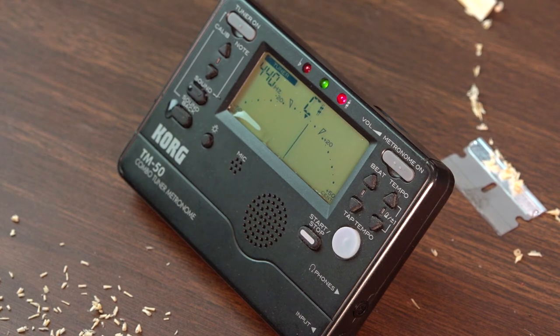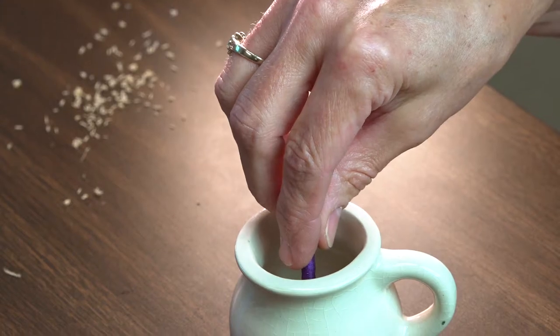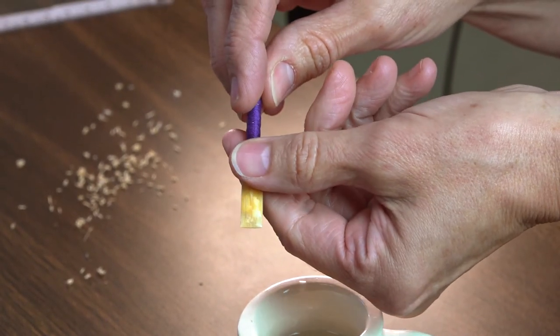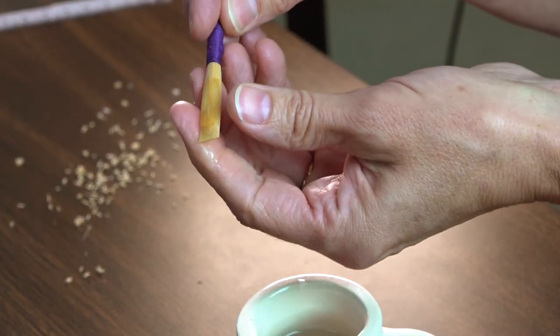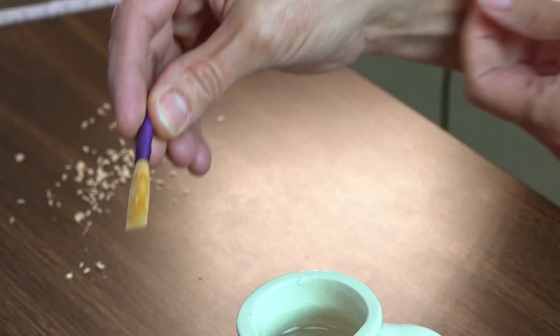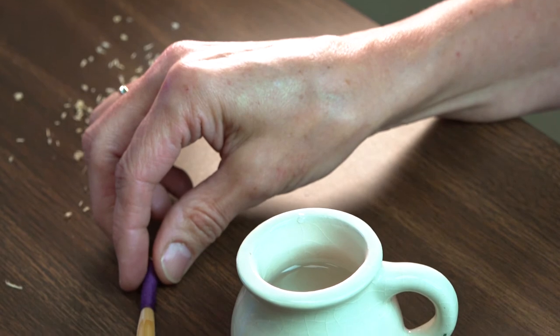Once the reed crow is close to C-sharp and seems to have the right amount of resistance, get the reed wet one more time, gently squeeze the reed open, and let it dry at least 24 hours. Then it will be ready for the second scrape.